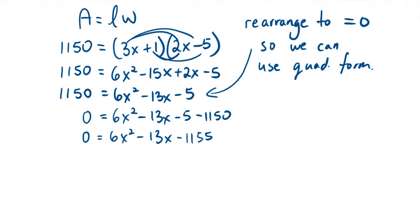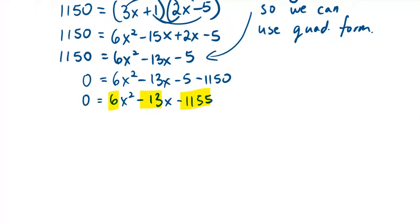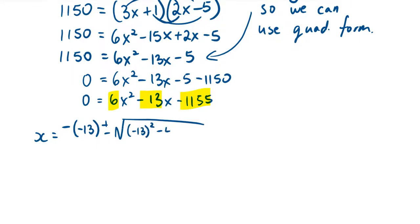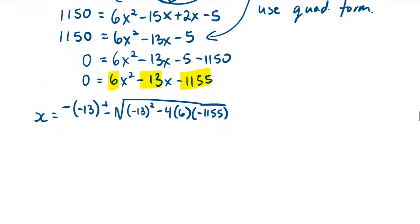We now have a quadratic equation in standard form equal to 0, where we can read our a, b, and c values. Applying the quadratic formula: x equals negative b — so negative of negative 13 — plus or minus the square root of b squared, which is negative 13 squared, minus 4 times a (which is 6) times c (which is negative 1155), all divided by 2a, so 2 times 6. Don't forget your negative signs.